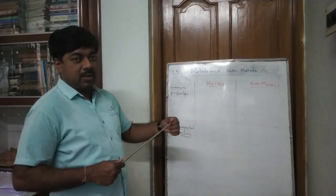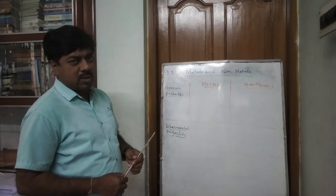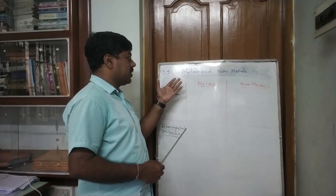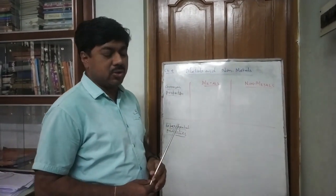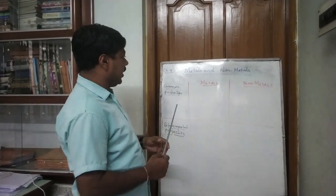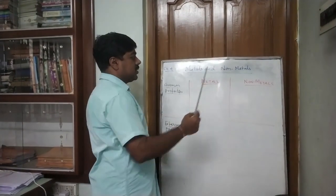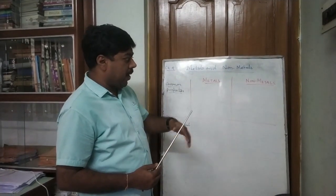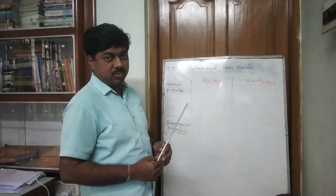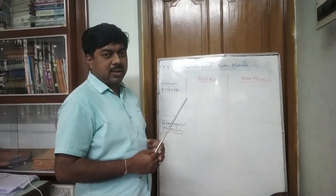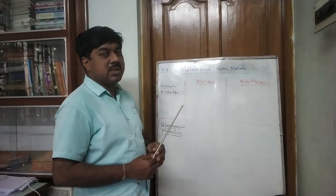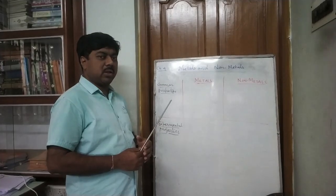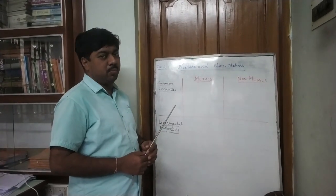Regarding this chapter, as per your interest, you want to know whether it is coming under Physics, Chemistry, or Biology. We can say that Metals and Non-metals is a typical chapter of Chemistry, but a part of Physics is also involved. In some other cases it is also called Physical Science. So you can say it is a part of Chemistry and Physics both.